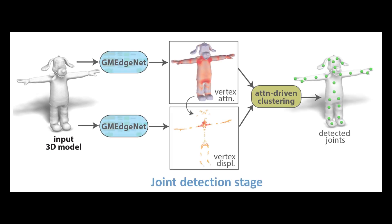In the first stage, RigNet processes the input 3D model to estimate locations of joints, shown here as green on the right.